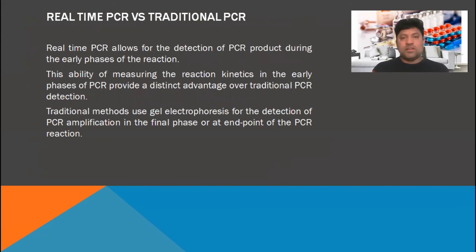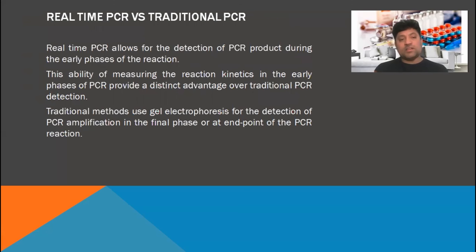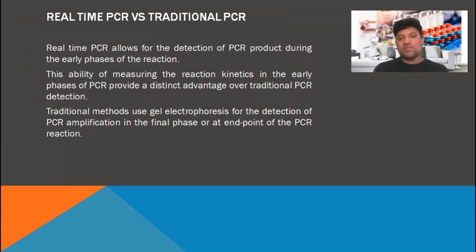What is real-time PCR versus traditional PCR? Real-time PCR allows for the detection of PCR product during the real phase of the reaction. This ability to measure the reaction kinetics in the early cycles of PCR provides a distinct advantage over traditional PCR detection. Traditional methods use gel electrophoresis for the detection of PCR amplification in the final phase, or at the endpoint of the PCR reaction.